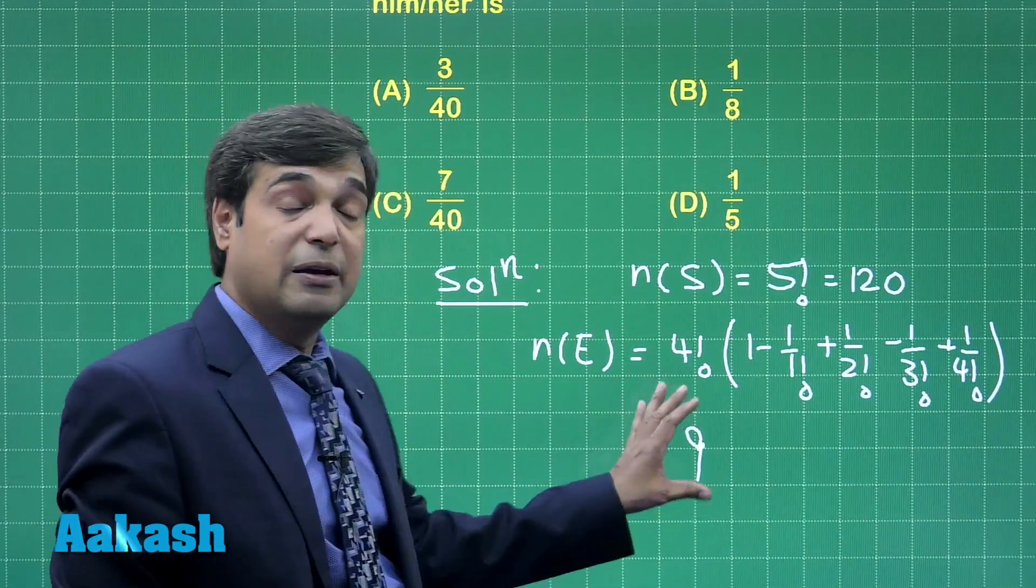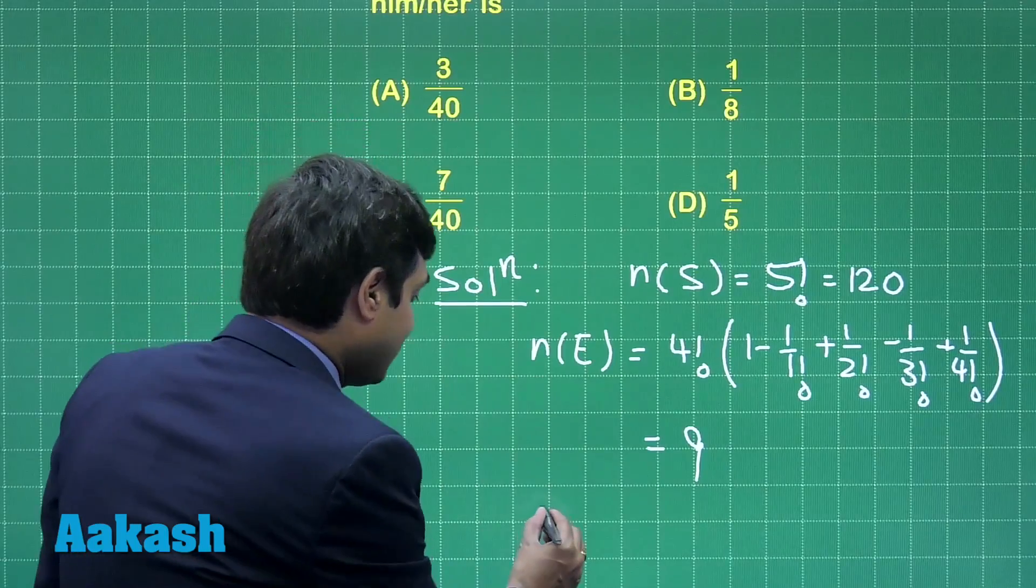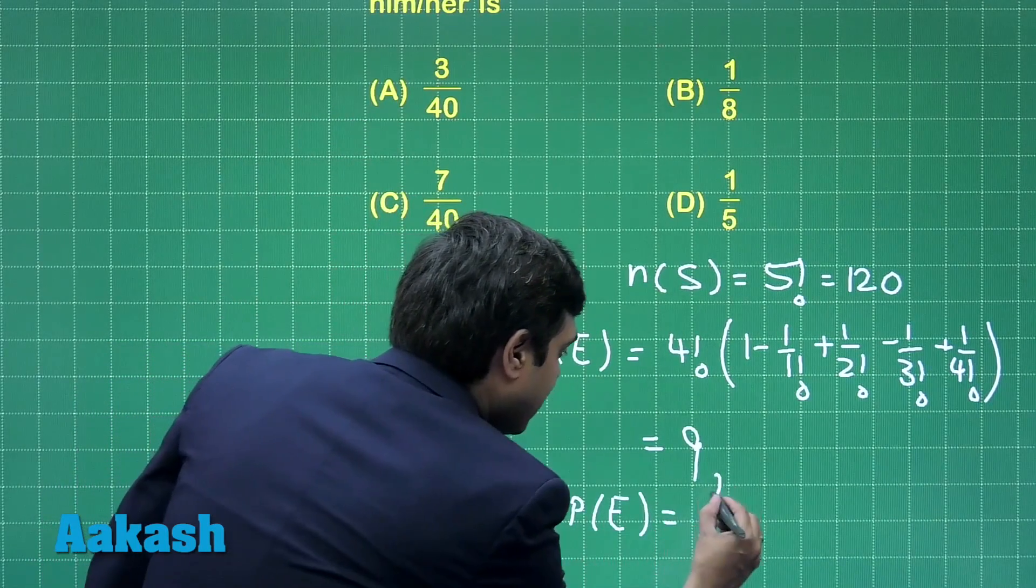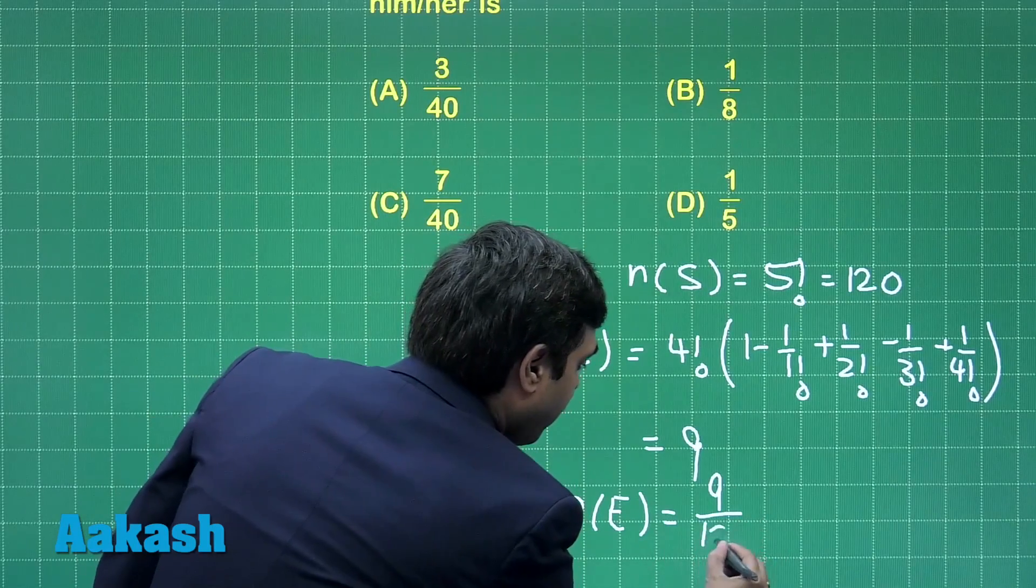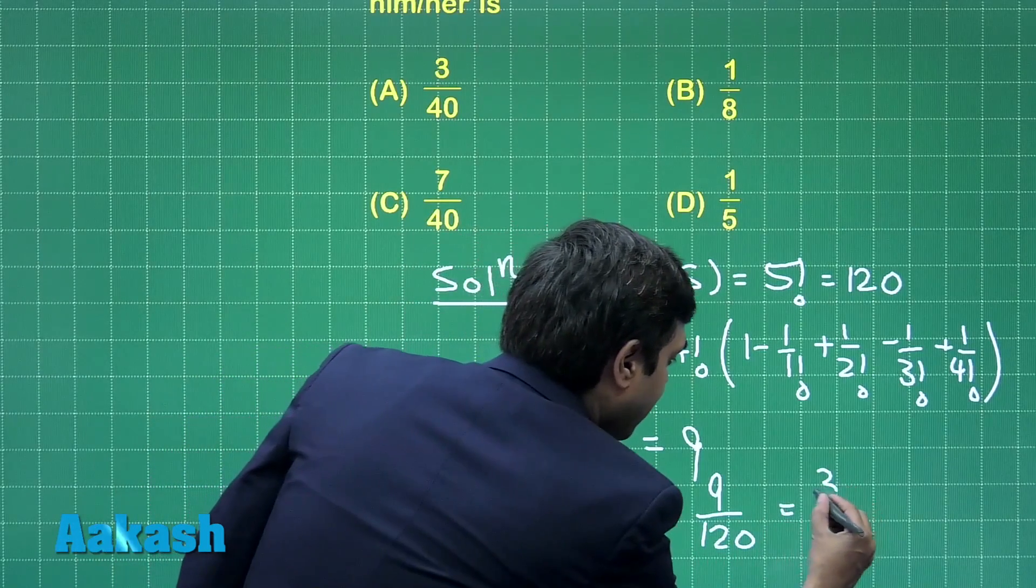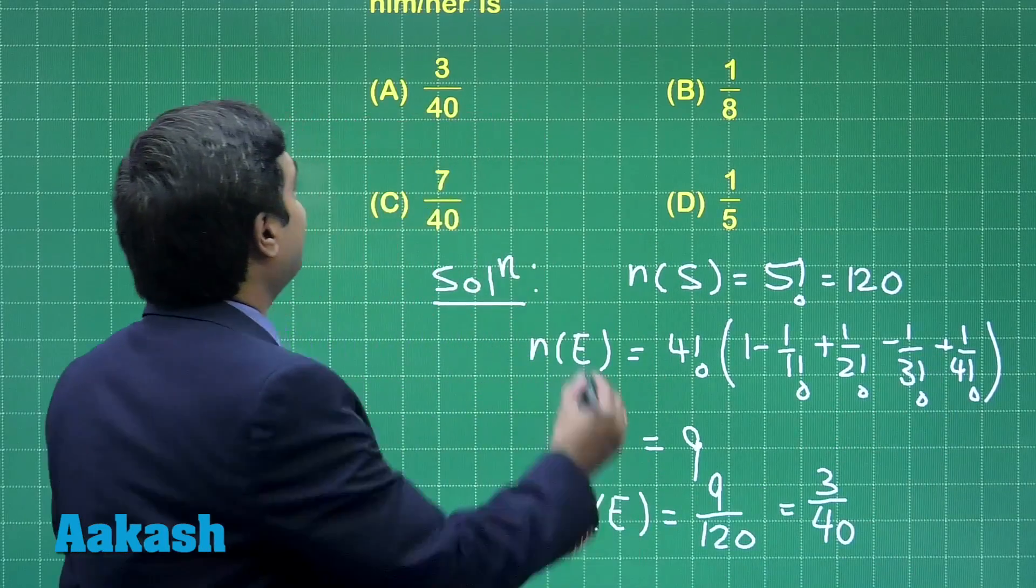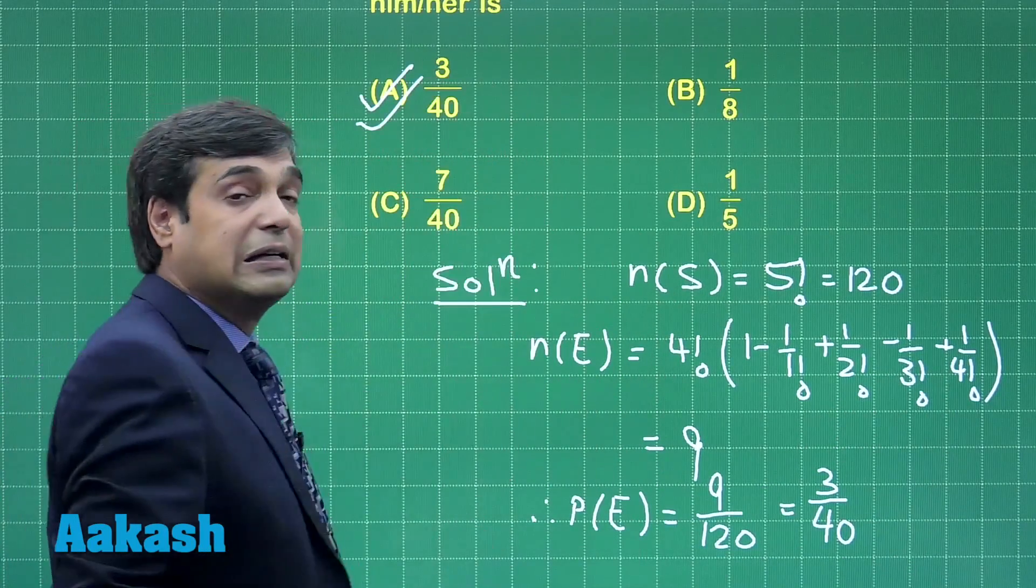So there are 9 cases favoring this event, hence the required probability of this event is 9 upon 120 or simply 3 upon 40. Looking at the given options we can see option A is the correct answer.